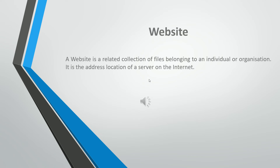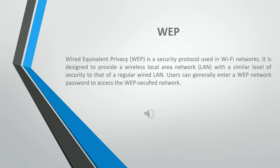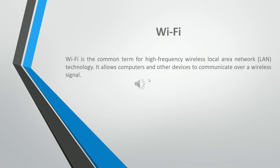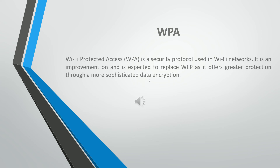A website is a related collection of files belonging to an individual or organization. It is the address location of a server on the internet. Wired Equivalent Privacy (WEP) is a security protocol used in Wi-Fi networks. It is designed to provide a wireless local area network (LAN) with a similar level of security to that of a regular wired LAN. Users can generally enter a network password to access the WEP-secured network. Wi-Fi is the common term for high-frequency wireless local area network (LAN) technology. It allows computers and other devices to communicate over a wireless signal. Wi-Fi Protected Access (WPA) is a security protocol used in Wi-Fi networks. It is an improvement on WEP and is expected to replace it, as it offers greater protection through more sophisticated data encryption.